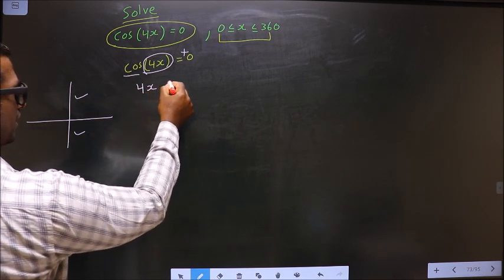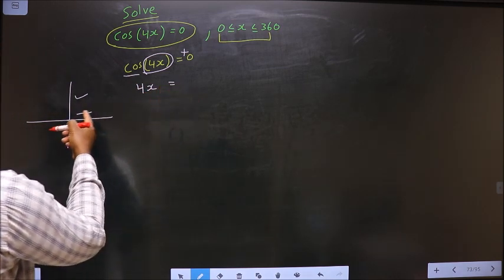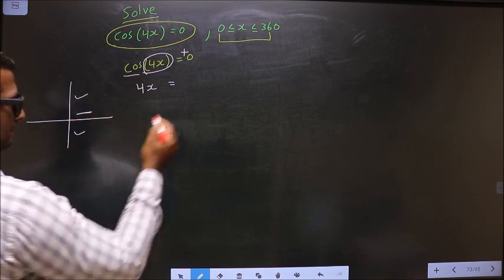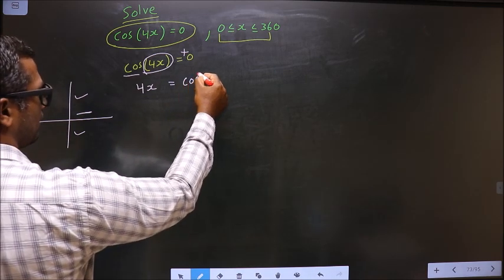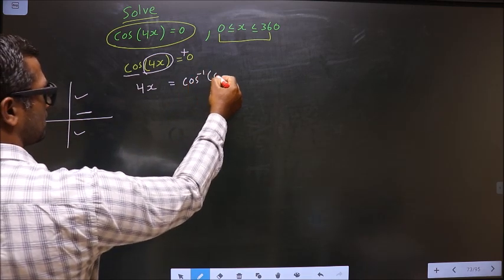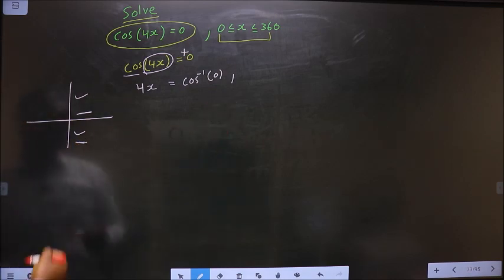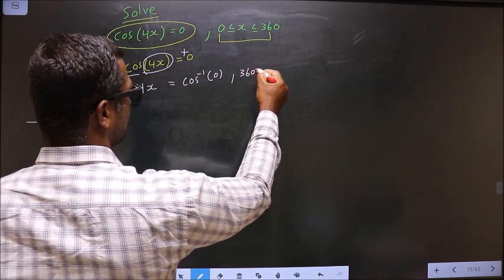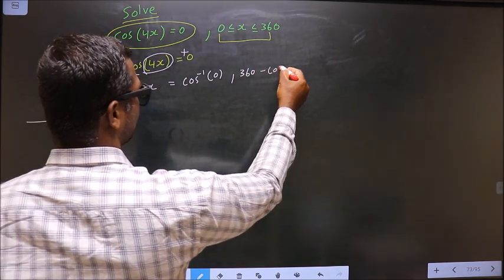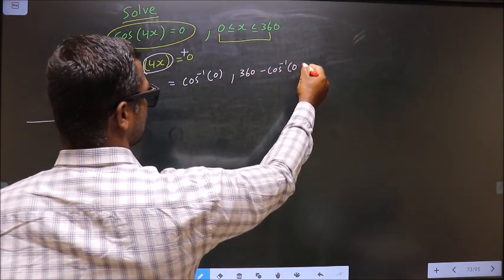So now 4x equals: to get an angle in the first quadrant, we do cos inverse of 0 directly. To get an angle in the fourth quadrant, we do 360 minus cos inverse of 0.